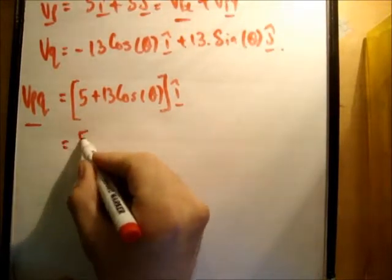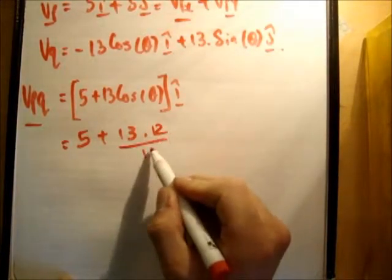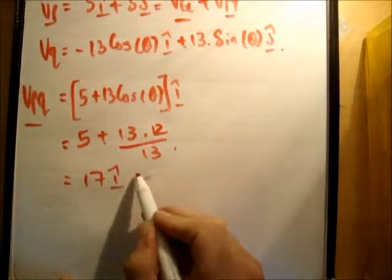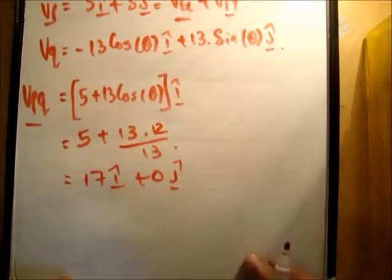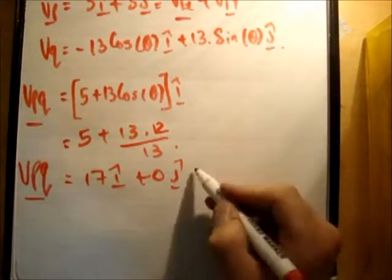So it's equal to 5 plus 13 times the cos, which is 12 over 13. So that becomes 17 I hat plus 0 J. That's correct.